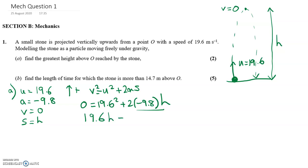I've got 19.6H equals 19.6 squared. So obviously when I divide over, I have H equals 19.6. So that's my answer to part A.